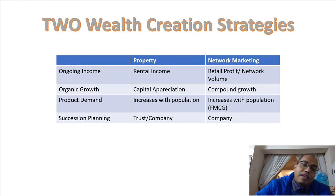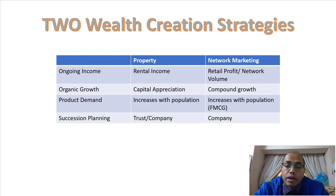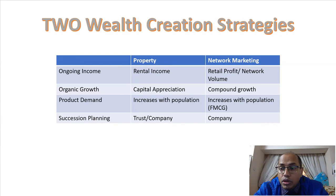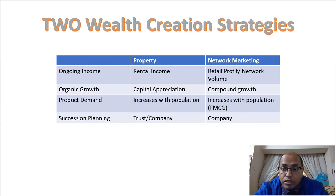The second point is organic growth, which is quite crucial in any wealth creation strategy. Property values appreciate — they say every 10 years the value probably doubles on average. When property prices go up, that's appreciation, your capital grows, and you can take equity out of that house by remortgaging based on the revised value.